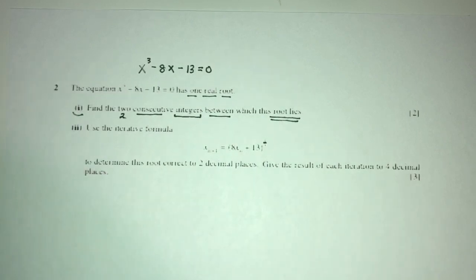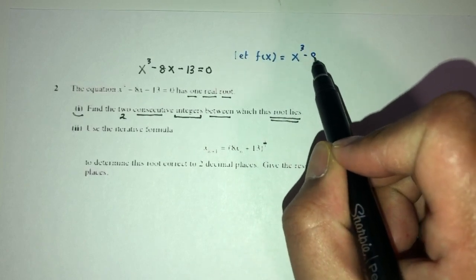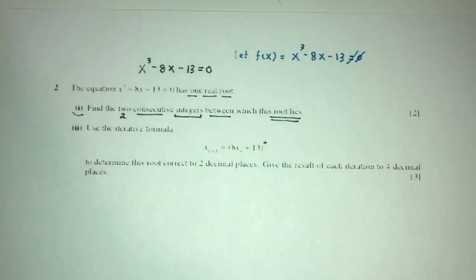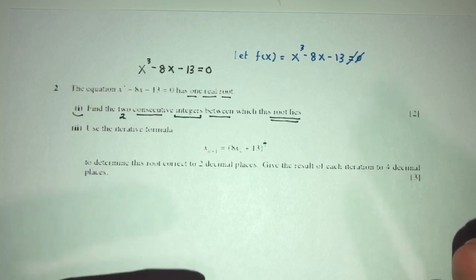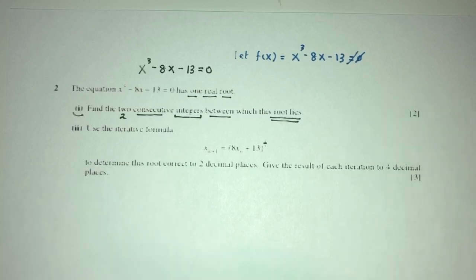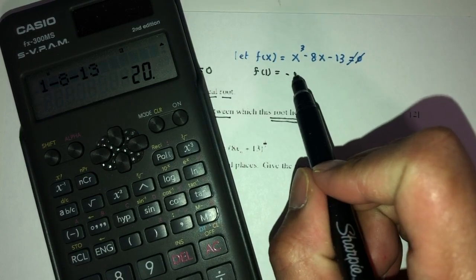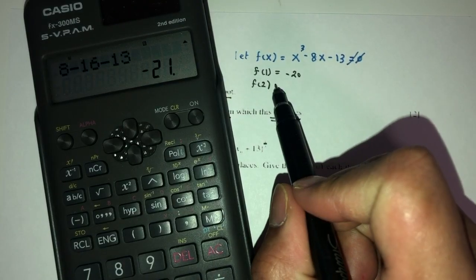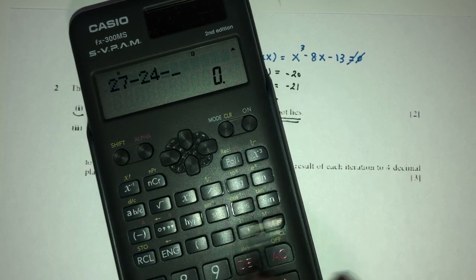So usually how would you do that? Let f(x) be our function: x cubed minus 8x minus 13. We don't really know where the root lies, so we test by trial. Let's begin with f(1): 1 minus 8 minus 13 gives minus 20. Then f(2): 8 minus 16 minus 13 — still negative. Then f(3): 27 minus 24 minus 13 gives minus 10. It is decreasing, so we continue.